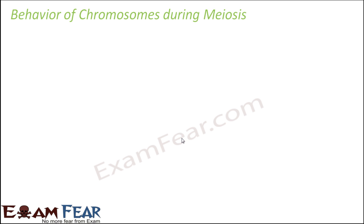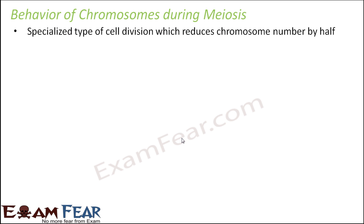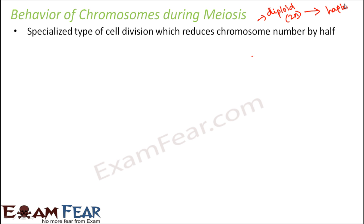Let us quickly see what happened during meiosis and how the chromosomes underwent a change. Meiosis is a specialized type of cell division which reduces the chromosome number by half, and that is why it is also known as the reductional division. If you start with a diploid cell you end up getting haploid cells — diploid cells have two sets of chromosomes, and from that you get haploid cells with one set of chromosomes.